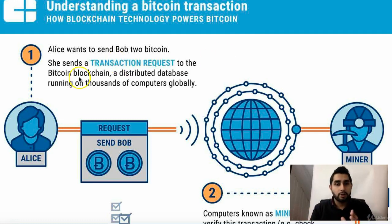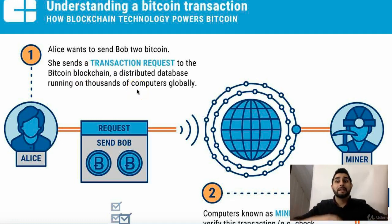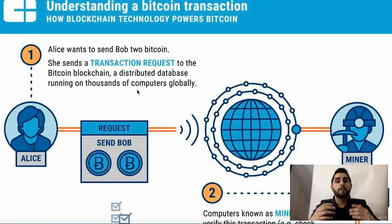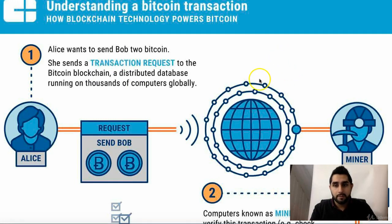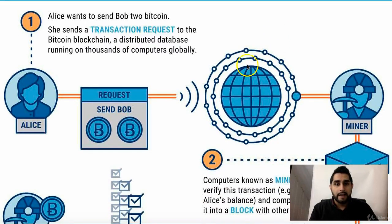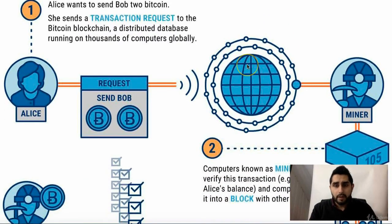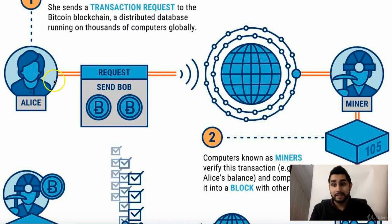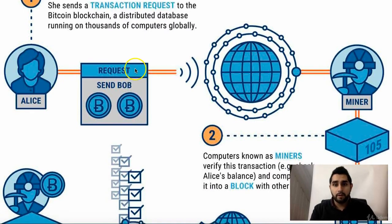She sends the request on the blockchain. Now, as we mentioned before, the blockchain is almost like the cloud — it's a whole network of different computers and databases running. So this is like a nice little image of it, and that's the actual request — that's how people are involved.